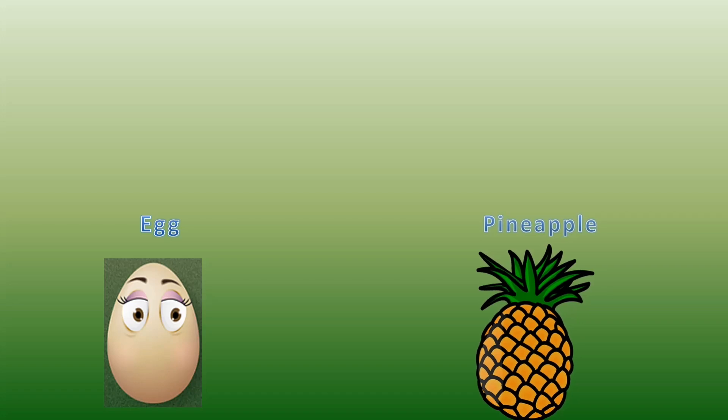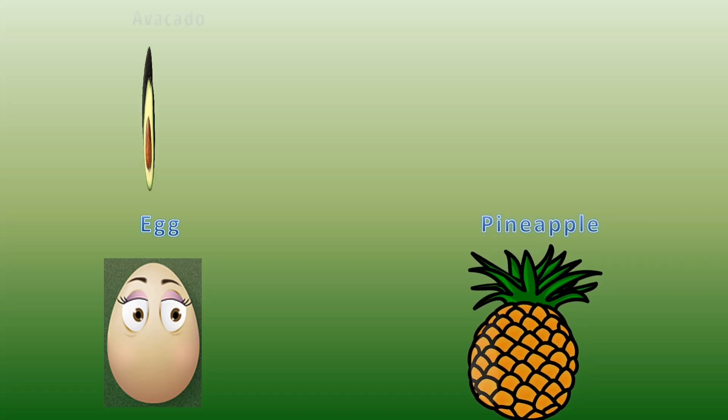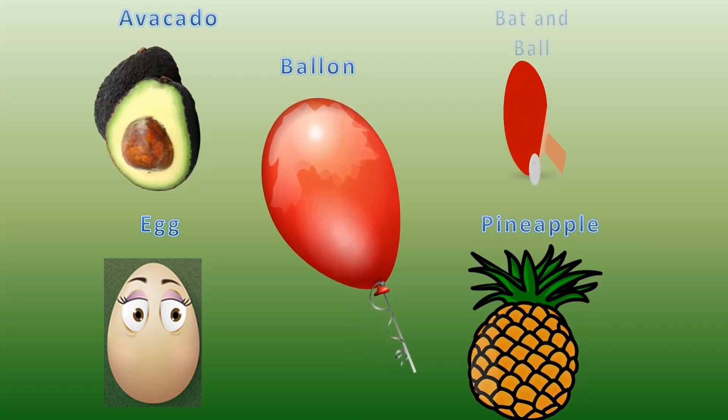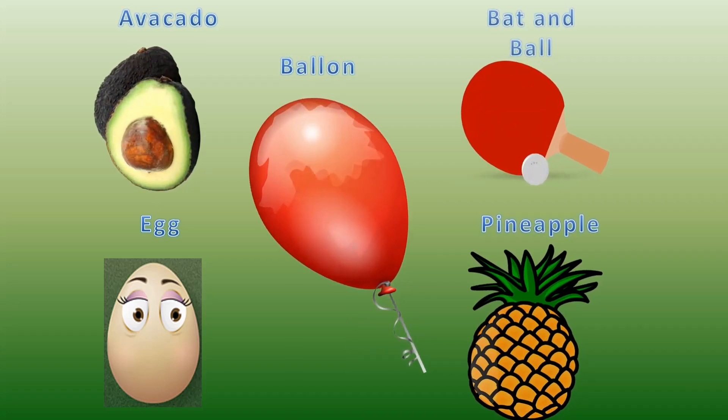Could we find the objects which are oval in shape? Egg, pineapple, avocado, balloon, bat and ball.